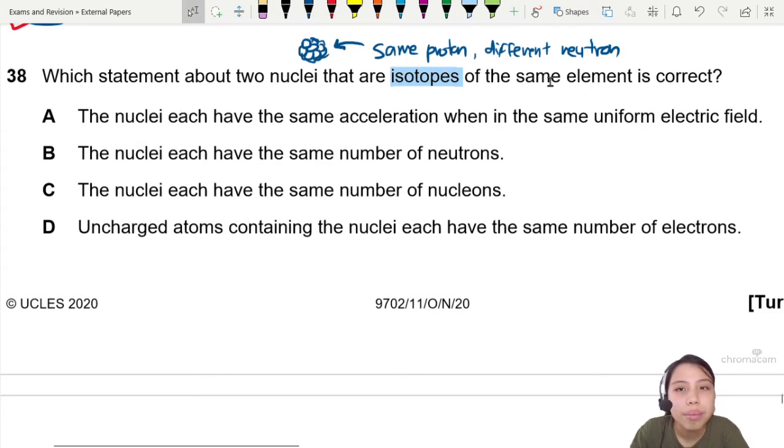A, the nuclei, both of them. I'm going to draw another one now. Okay, sure, here's another one. Here's another one. The nuclei each have same acceleration when in the same uniform electric field. What affects acceleration?